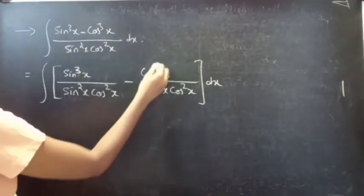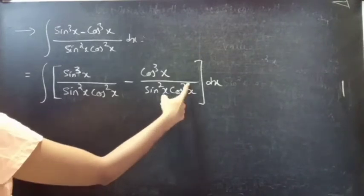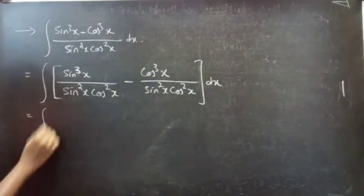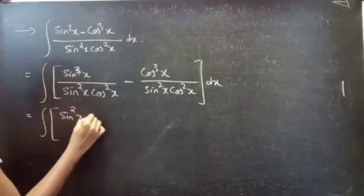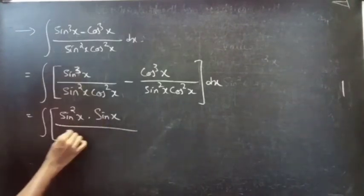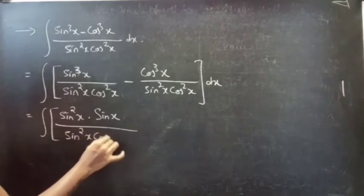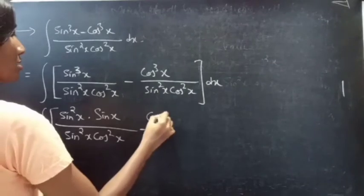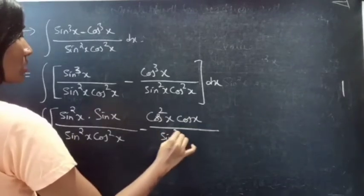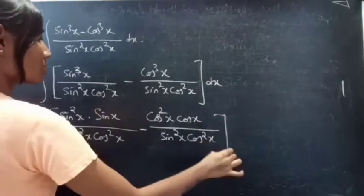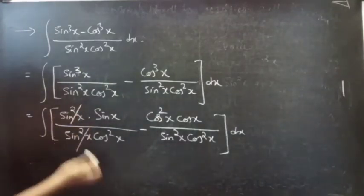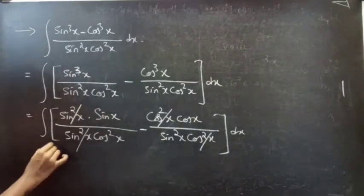In the second term, we have cos³x in the numerator and cos²x in the denominator, so we can split cos³x as cos²x times cos x. This gives us the integral of (sin²x · sin x) divided by (sin²x · cos²x), minus (cos²x · cos x) divided by (sin²x · cos²x). Now we can cancel sin²x and cos²x from the numerator and denominator.